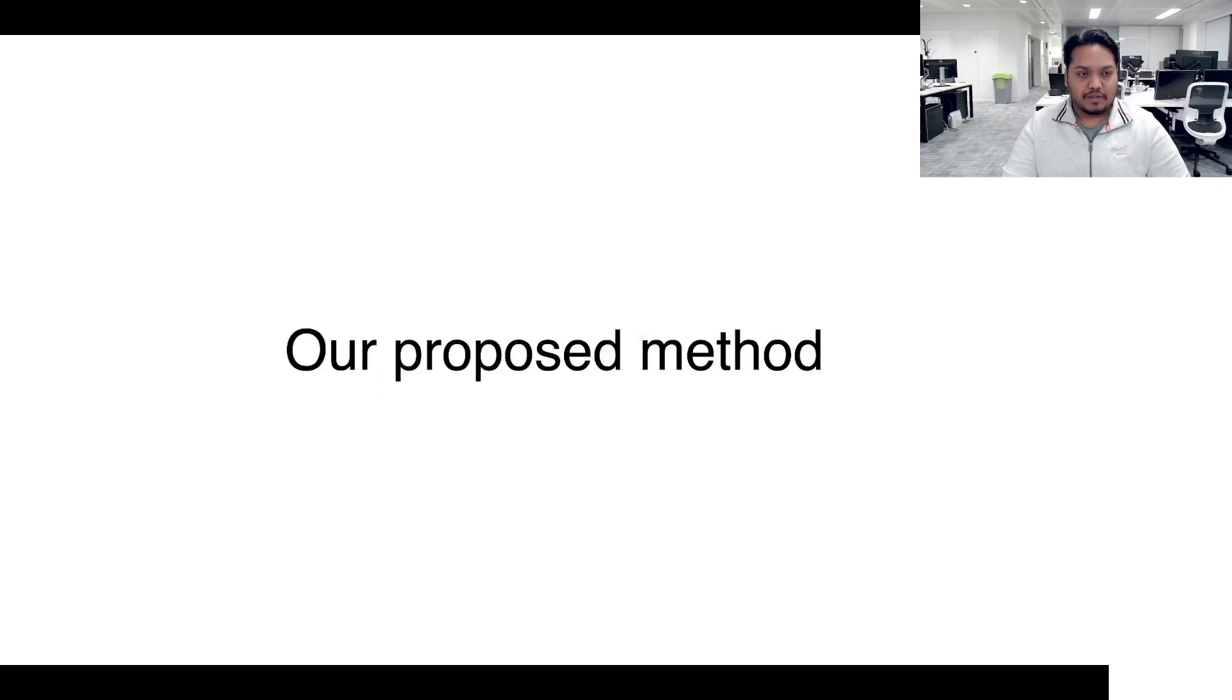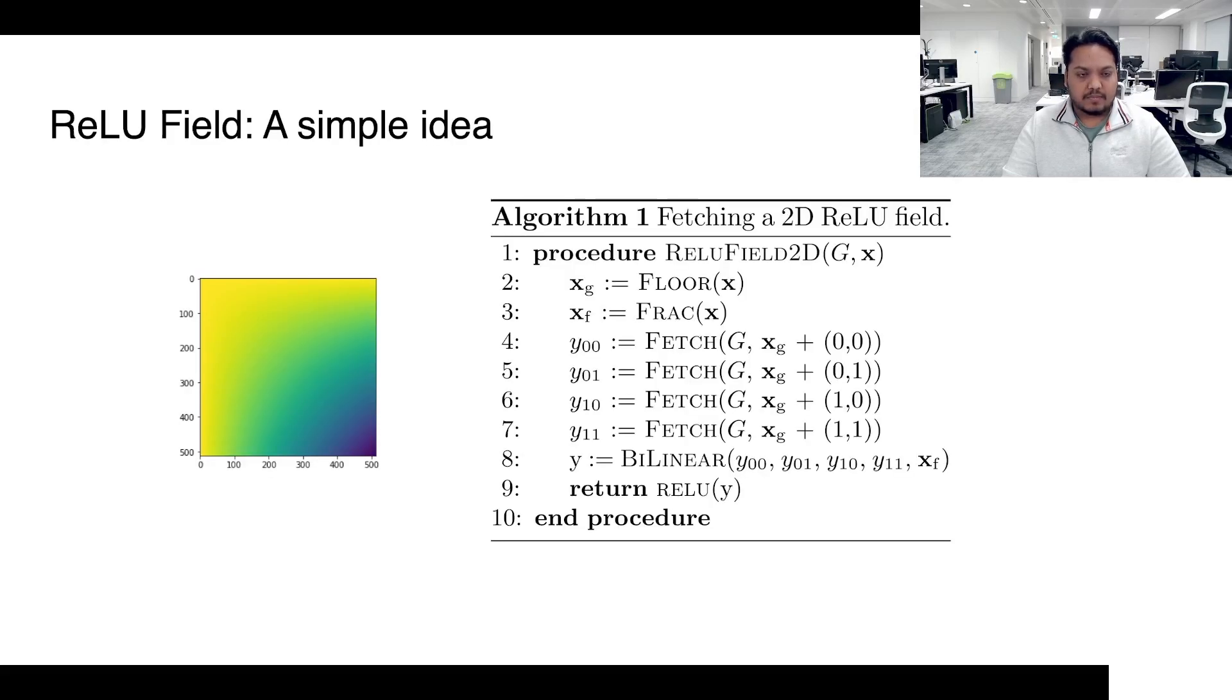Hence, the only proposed change for getting rid of this blurriness that we put forth is simply to inject a ReLU nonlinearity right after the bilinear interpolation. Importantly, note that we allow the density to take negative values, which in this case do not have a physical interpretation on the raw grid. The rest of the rendering process is agnostic to this change due to the nonlinearity being the ReLU function.